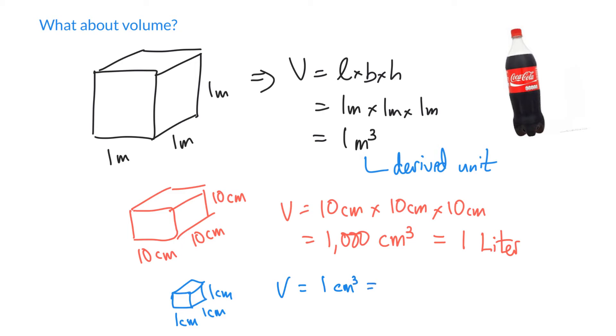If you notice, this is 1,000 times smaller than a liter. So we can say it is 1,000th of a liter. Or of course, 1,000th is milli, so we can write that as 1 milliliter. We can see that 1 centimeter cubed is exactly the same thing as 1 milliliter.